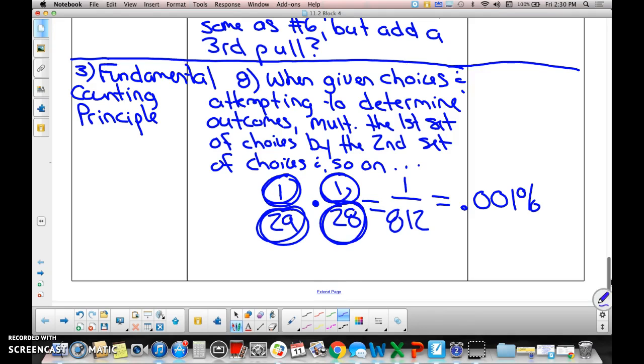If we did that, we would draw Fatima's stick after Tiffany's stick once every eight hundred and twelve times. Once every eight hundred and twelve times, which we figured out would be a very small percentage. Fundamental counting principle is pretty important.